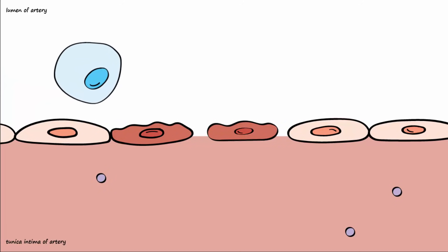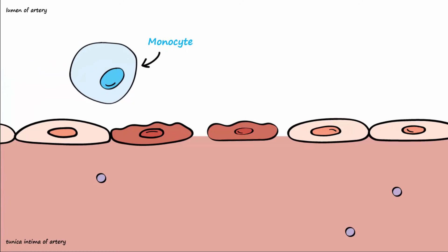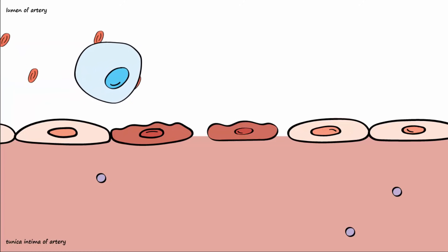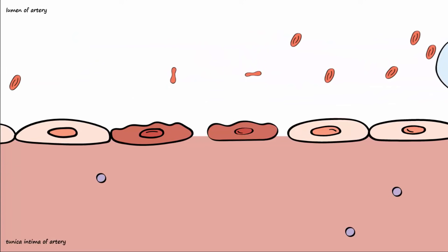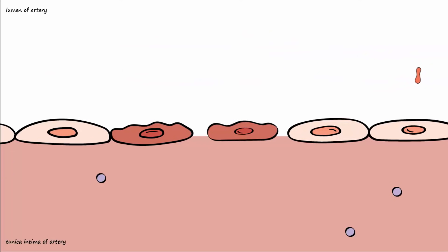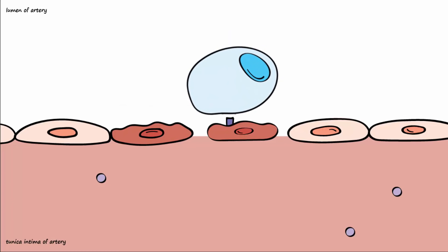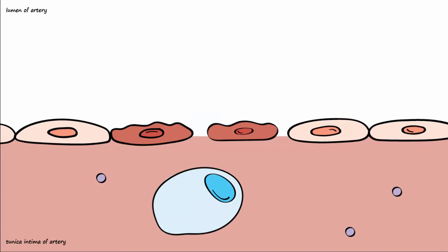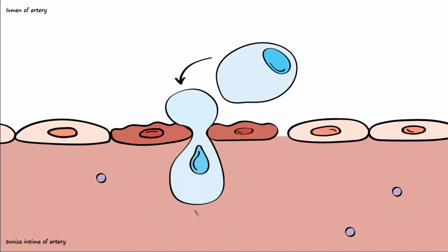White blood cells, such as monocytes, normally move freely through the blood vessels and do not attach to endothelial cells as they stream past. However, when endothelial cells are exposed to irritating stimuli or damage, they will express adhesion molecules that can capture nearby white blood cells. These white blood cells undergo morphological changes that allow them to flatten and squeeze between endothelial cells. This movement of white blood cells out of the bloodstream is called diapedesis.